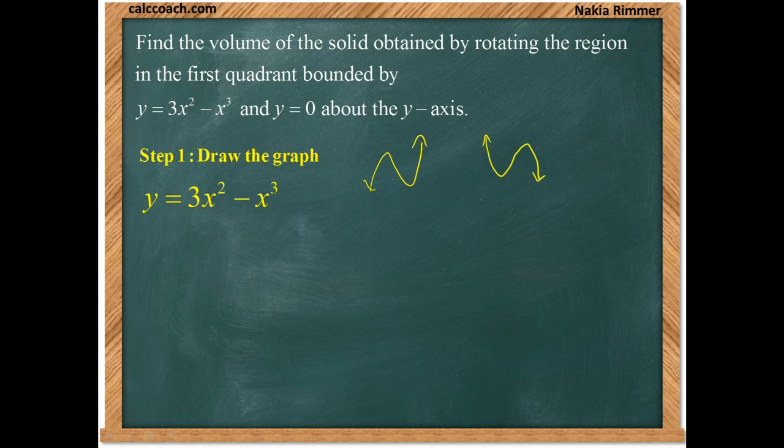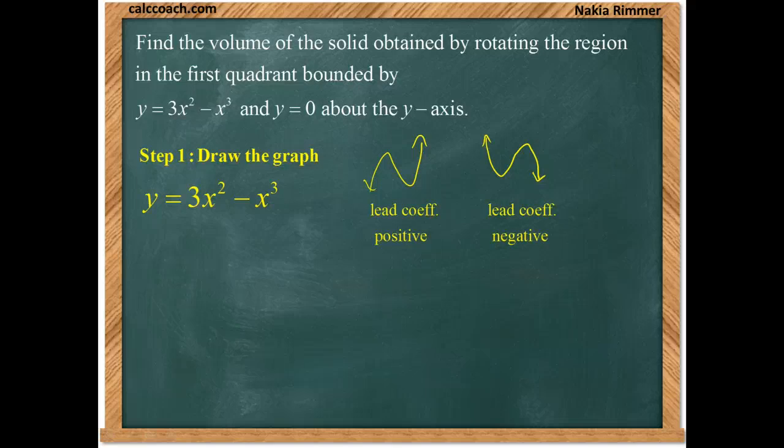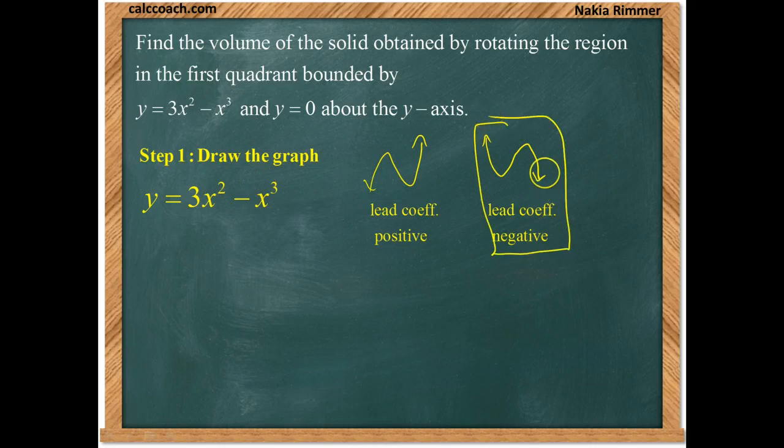The first drawing here is when the lead coefficient is positive, and the second one here is when the lead coefficient is negative. Now lead coefficient doesn't mean the first coefficient you see. The lead coefficient is the coefficient on the highest degree term on x. For us, that's a negative one, and so our graph should look something like this.